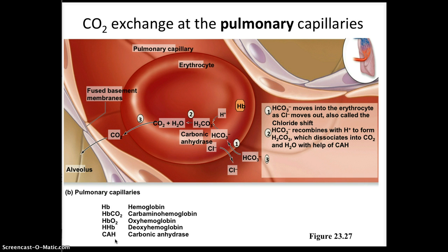Oxyhemoglobin refers to oxygen bound to the iron within the hemoglobin molecule. Deoxyhemoglobin can also carry hydrogen ions, which is why it is written as HHb. CAH stands for carbonic anhydrase, the enzyme involved in the CO2 conversion reaction.